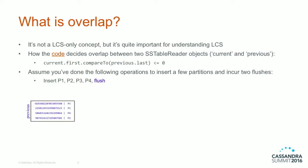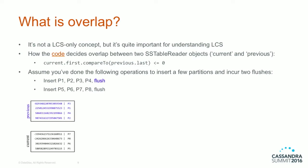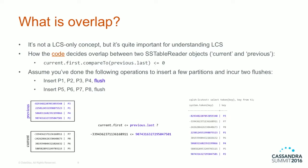Using an example: we insert partitions P1, P2, P3, P4 and do a flush, generating a blue-colored SSTable. Then we insert P5, P6, P7, P8 and flush, generating a black-colored SSTable. Do they overlap? Using the equation, current.first is the first token in the current SSTable block, and previous.last is the last token in the previous SSTable. You can see they are indeed overlapping because current.first is less than previous.last — the two colors are intermixed together in token-value order.